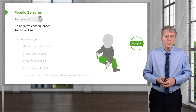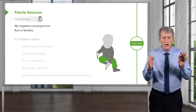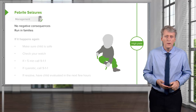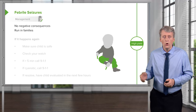Counsel families that these are benign entities. The question burning in every parent's mind is whether it caused brain damage — you should come out and tell them their child is going to be just fine. The last thing to be aware of is that febrile seizures can come back: one third of children who present with febrile seizures will have another before they outgrow them around age six.